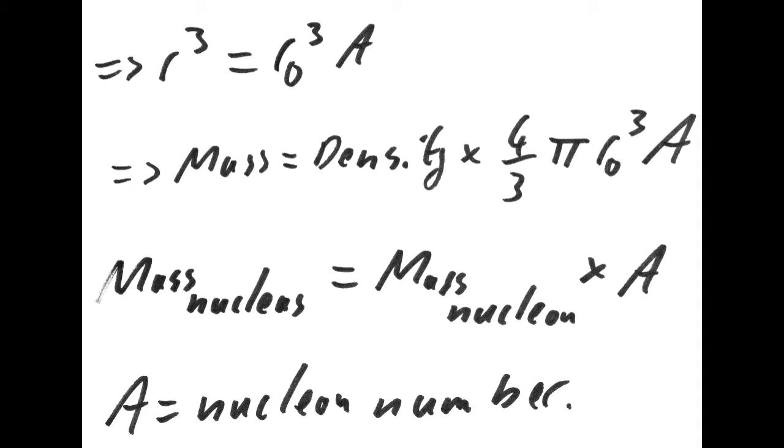So that means we can say that the mass of a proton times the nuclear number equals 4 thirds pi radius of a proton cubed, times the nucleon number, times density.